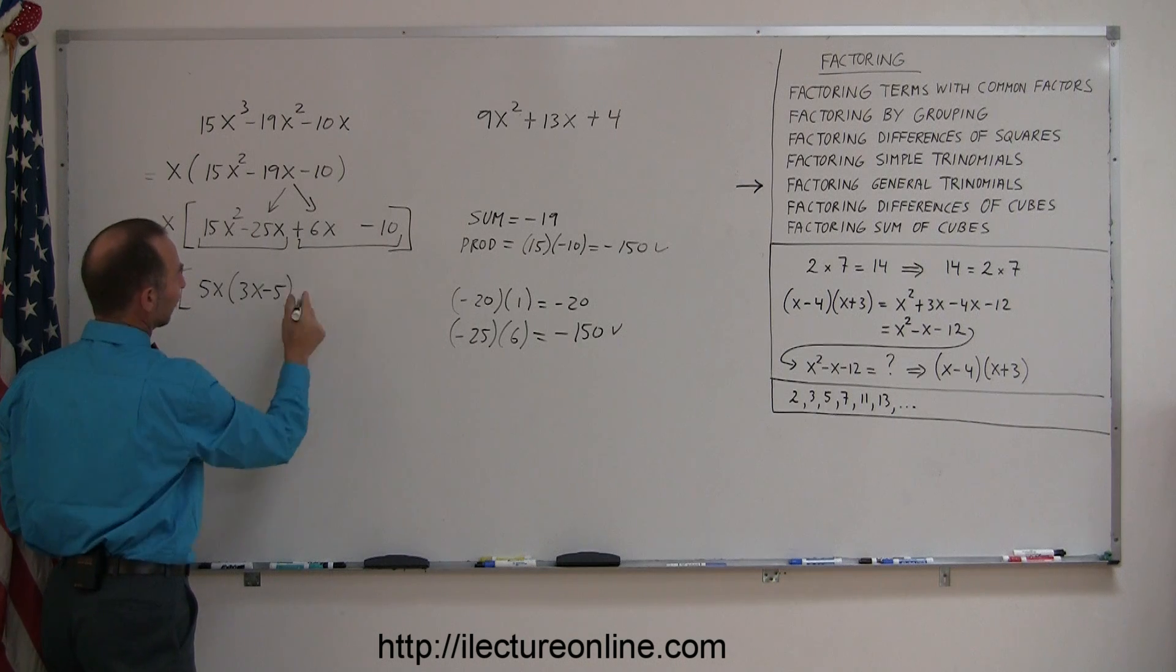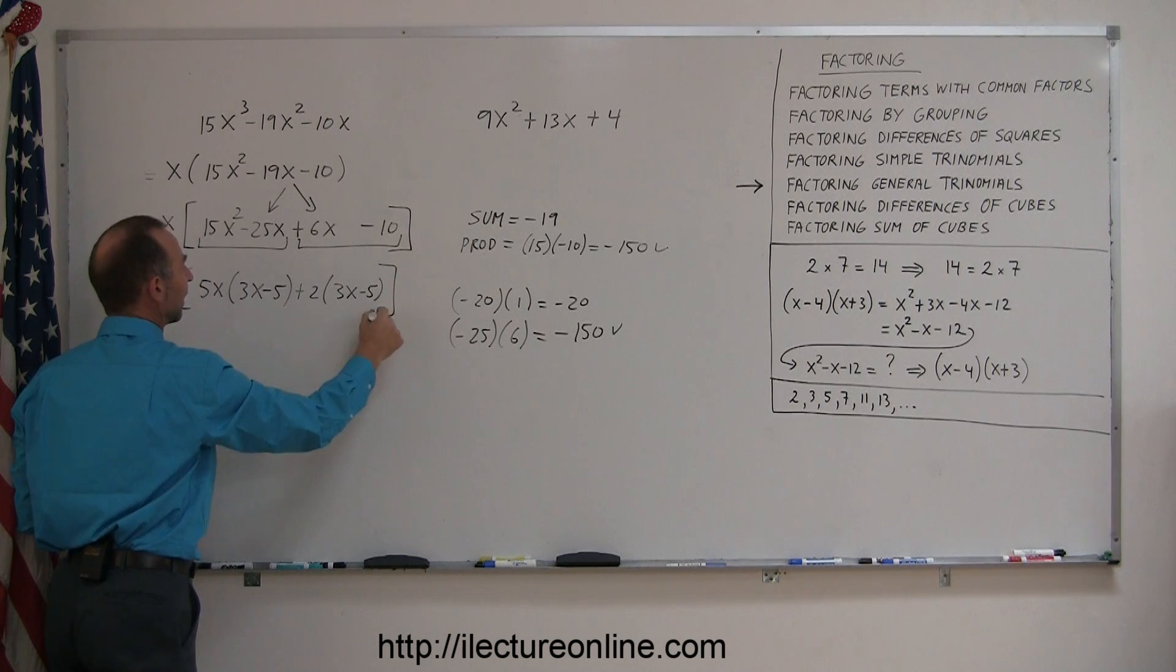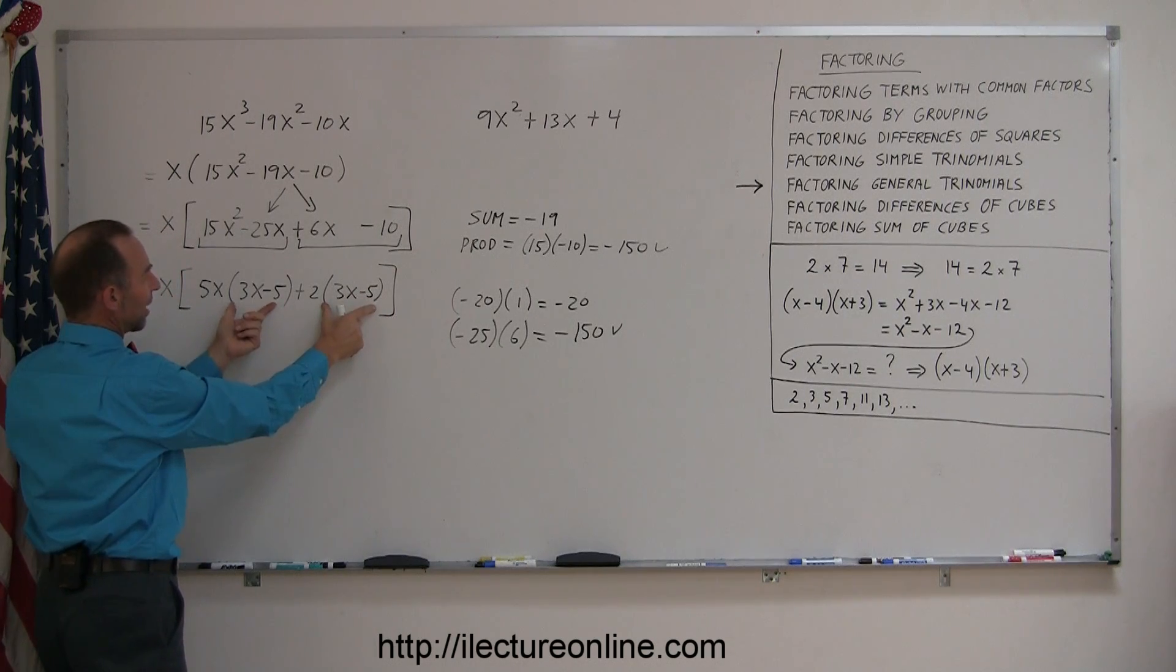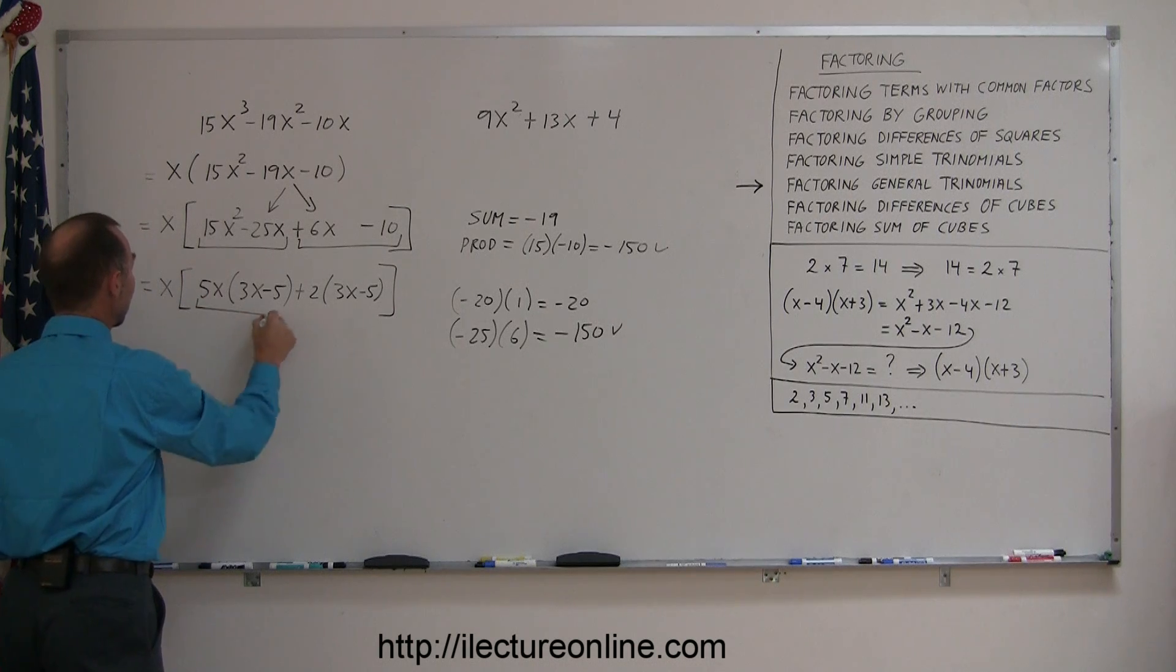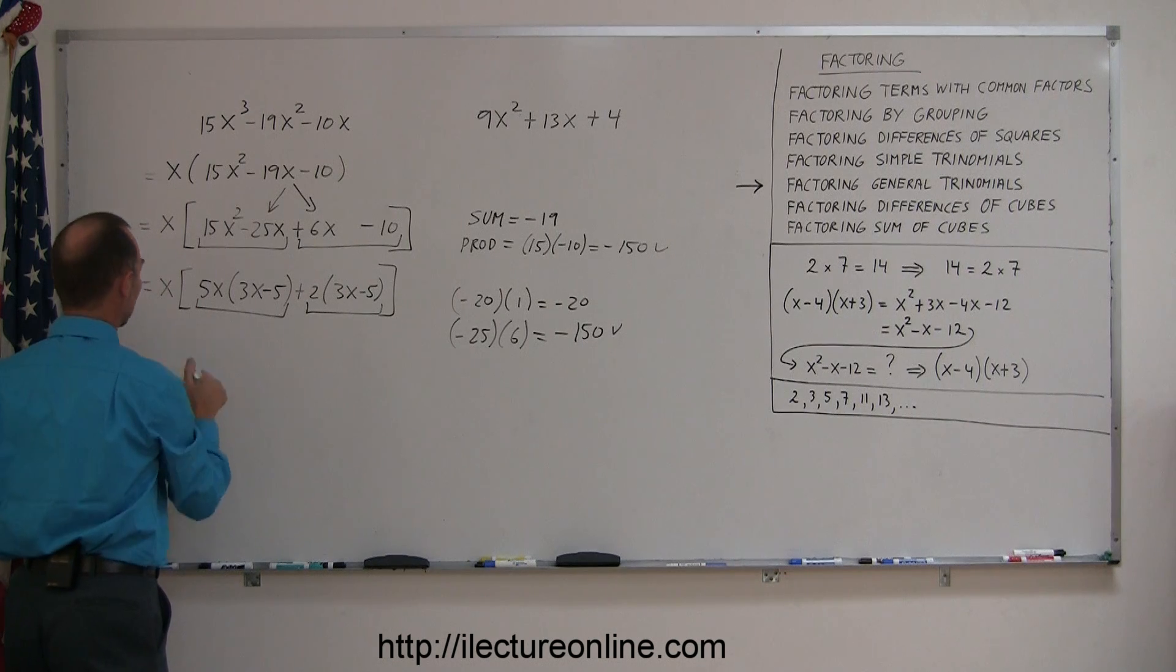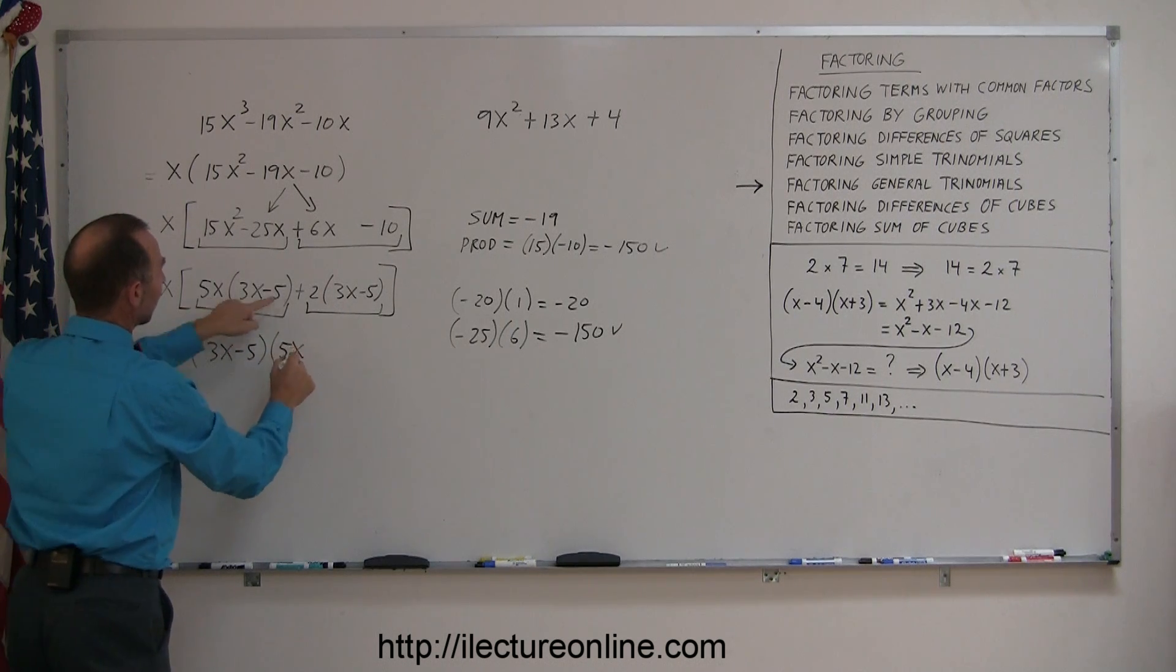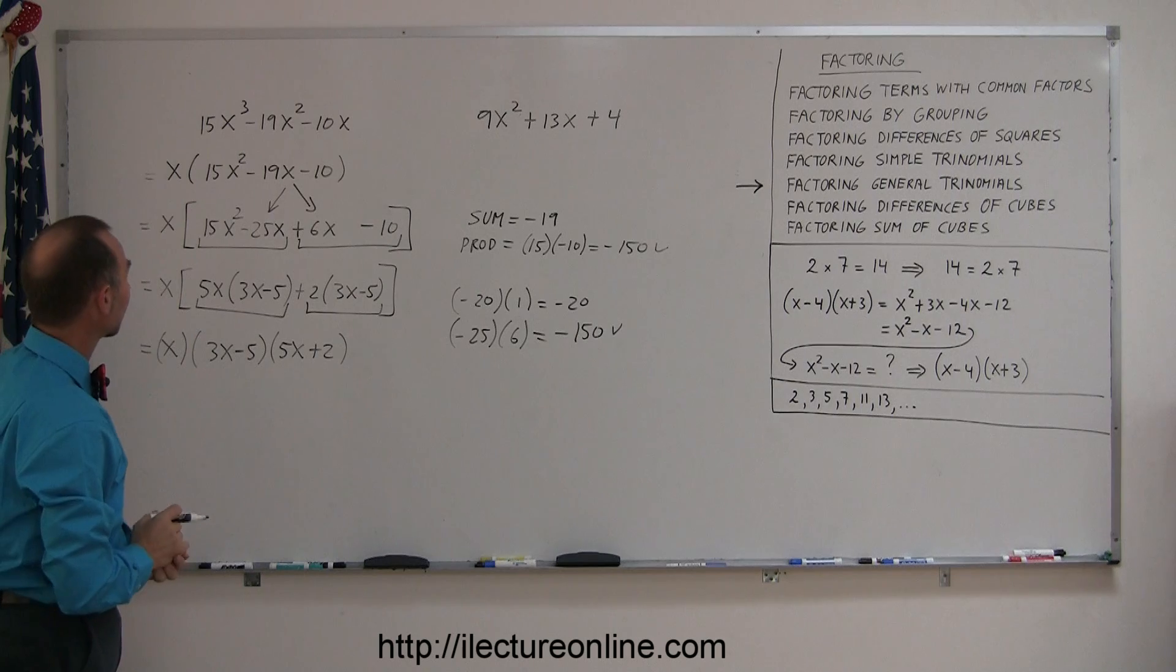Over here it looks like I can factor out a 2 and I'm left with 3x minus 5. Anytime you see this as being the same, you know you're in pretty good shape. So now you go ahead and look at these two terms. You realize that the 3x minus 5 is common for both terms, so you can factor that out. So you're left with x times 3x minus 5 and what you have left on the left side is 5x and on the right side is plus 2. And you're done. You have factored your original trinomial.